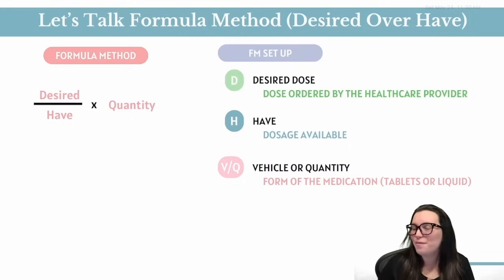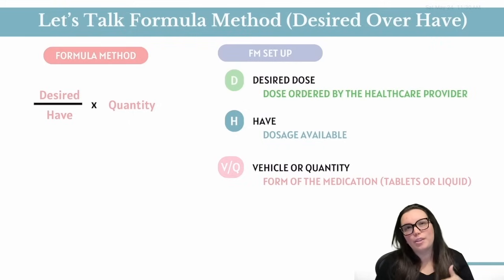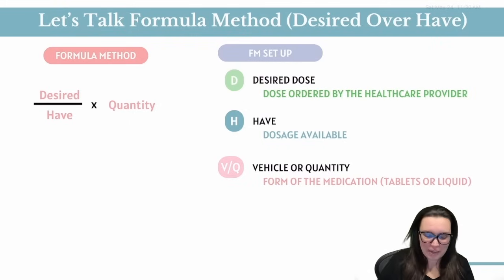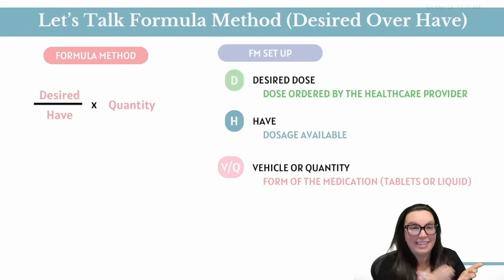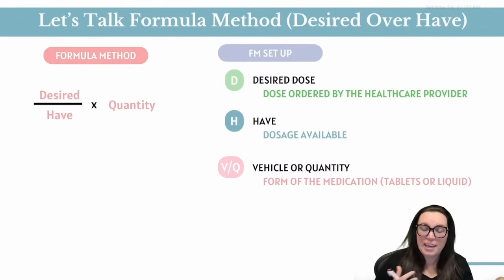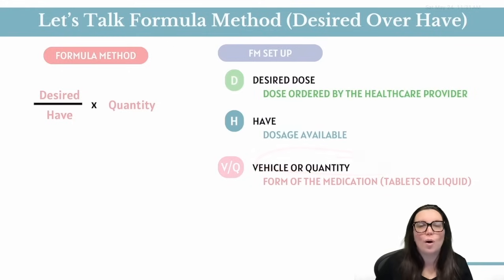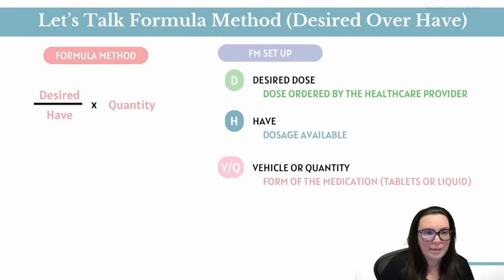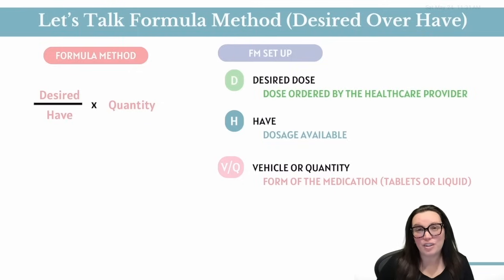Just like with our other fabulous calculation methods, the basic formula method also comes with its own lineup. We're starting with D, which stands for desired — this is what the provider wants the patient to get. Next up we have H, which stands for have, and this is what you physically have in your hand, what's printed on the label of the medication bottle. And then we have V or Q, depending on the school that you go to — they use them interchangeably, but it stands for the vehicle or the quantity. This is the form that the drug is available in: it could be a tablet, it could be mLs, it could be a glittery infused gummy, just whatever the medication is available in.